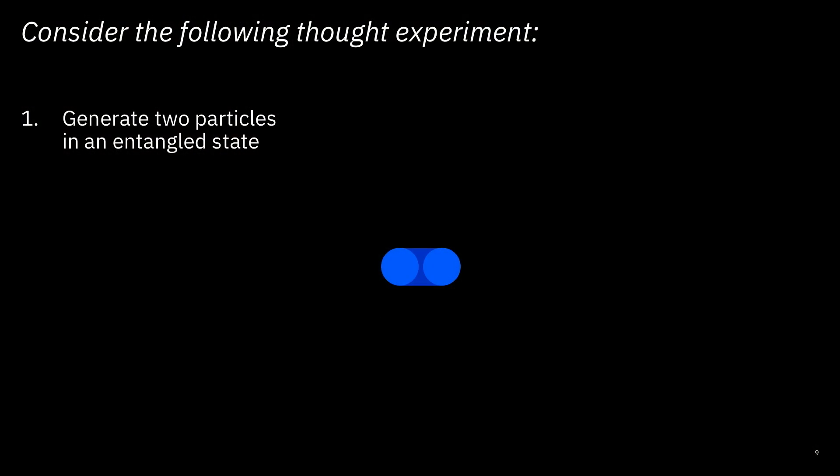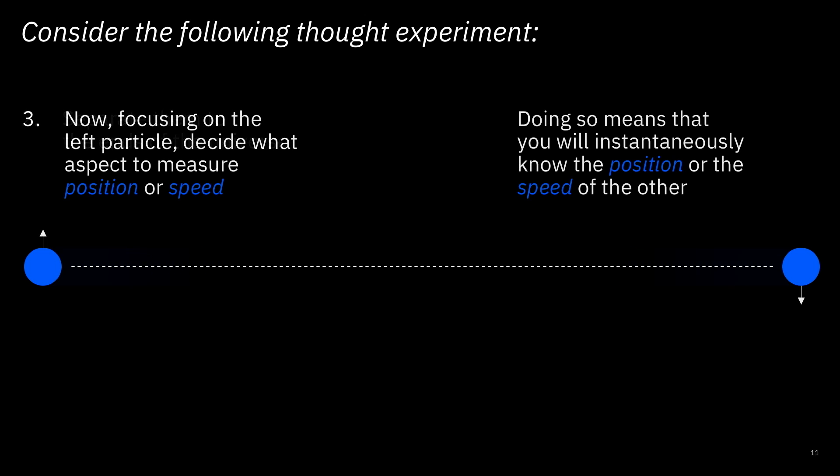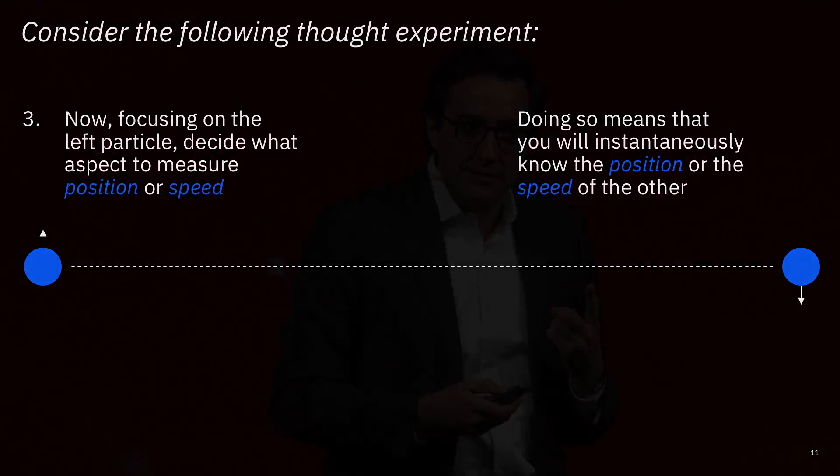So consider the following thought experiment to give you some understanding of what is behind entanglement. Let's say we take two particles and we entangle them. We create this property that I'm trying to describe. And now what we do as a thought experiment is we separate them and we send them to the two ends of the universe. Now what we're going to do is taking one of the particles, an experimenter is going to go there and is going to decide which aspect to measure, either its position or its speed. Now what is very fascinating what happens is that the moment we do that, the act of performing that measurement in one of the particles that is one of the extremes of the universe, it would mean that we would instantaneously know either the position or the speed of this other particle that is on the other side of the universe.